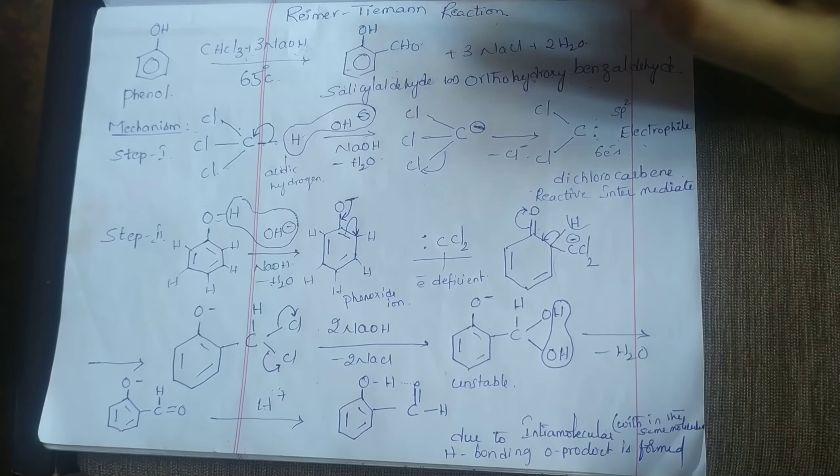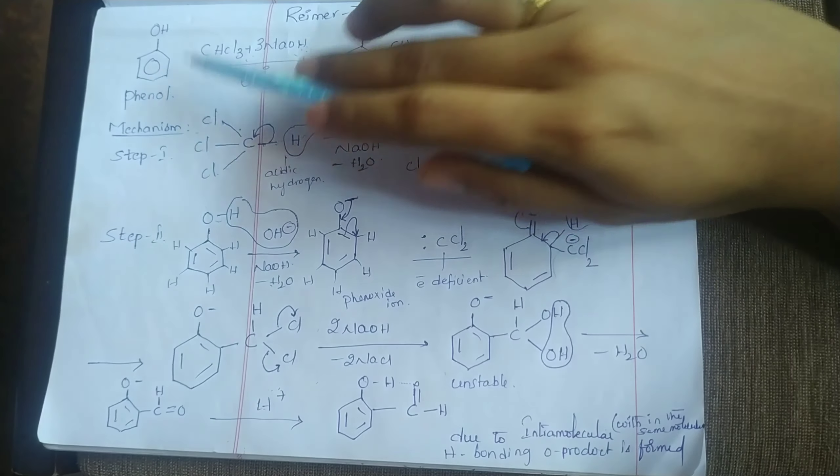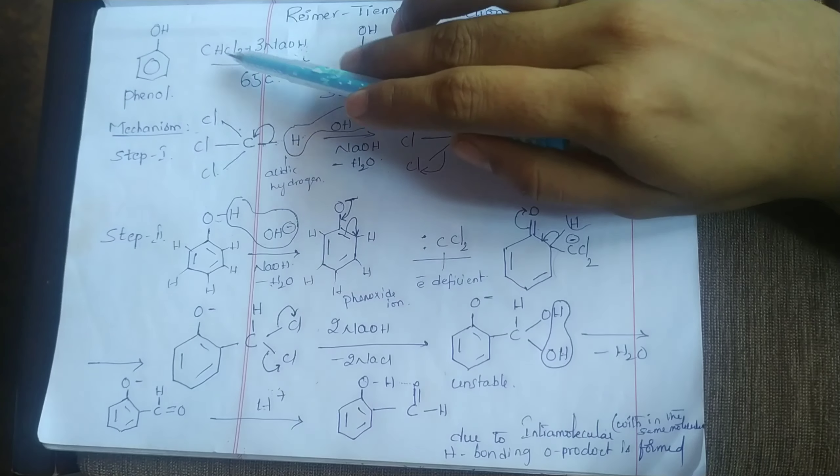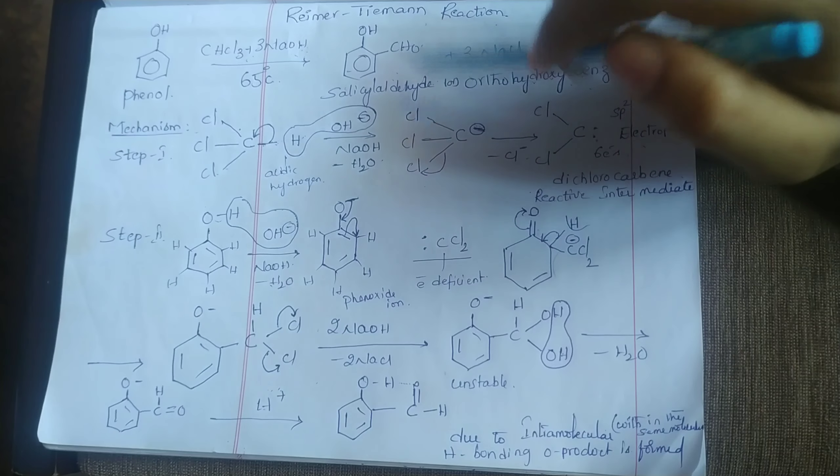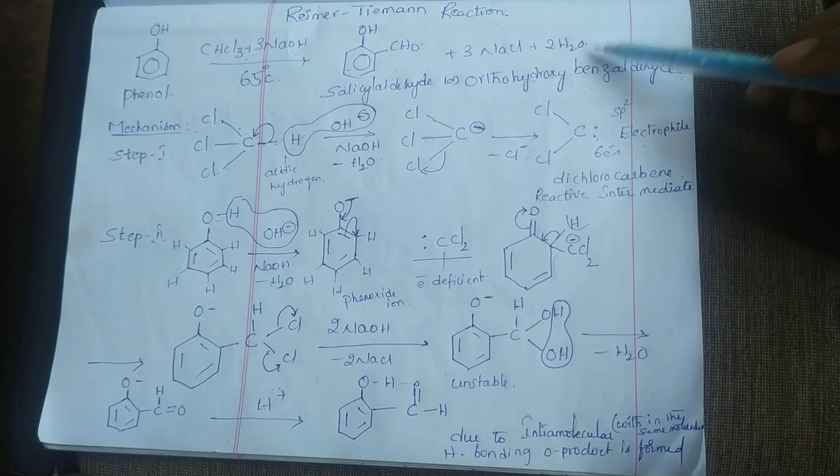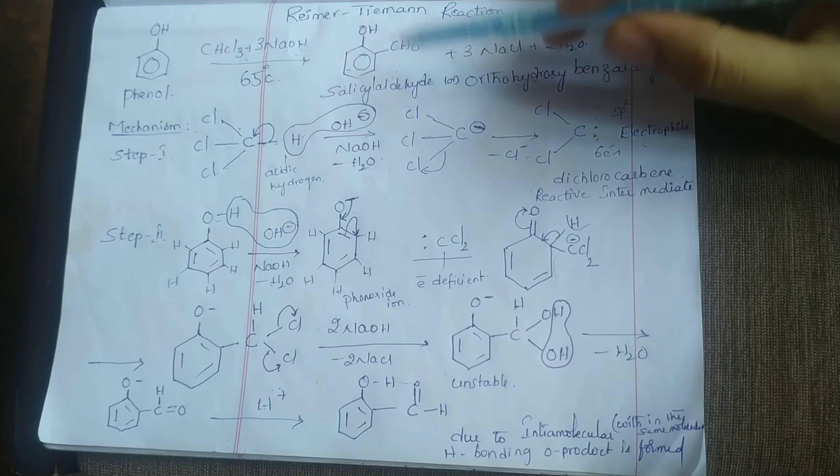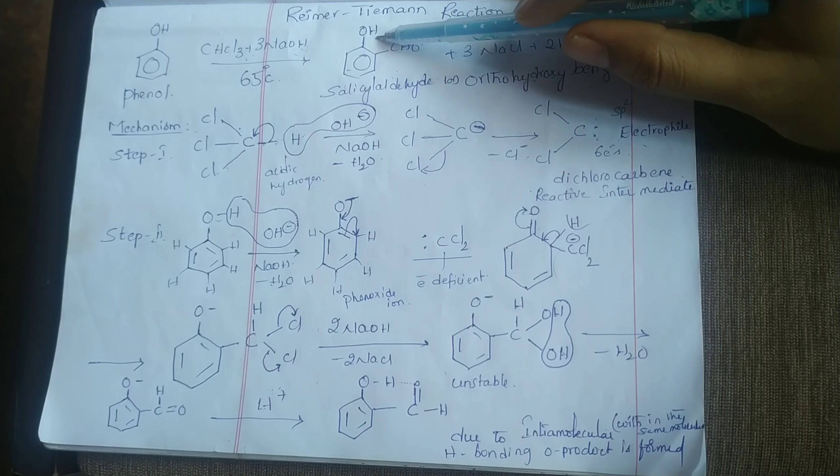What is Reimer-Tiemann reaction? Phenol reacts with chloroform in the presence of NaOH or KOH to form salicylaldehyde plus 3 NaCl plus 2 H2O. Here two functional groups are present.